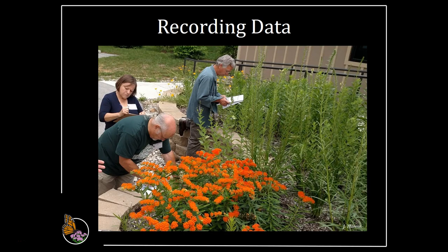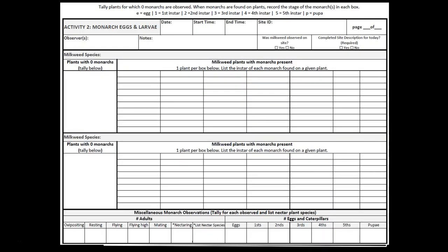Now let's review how to record data on your data sheet. We use a paper data sheet example here, with some review of the Survey123 app form. Fill out first the data at the top, such as the date, your start time, your site ID, your name, and any notes that are helpful to you.